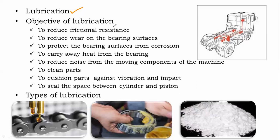Now the objective of lubrication. The first objective is to reduce frictional resistance. Just imagine a bicycle — there is a bicycle chain, and we pour oil on the chain for smooth movement. Smooth movement means there will not be much frictional resistance.